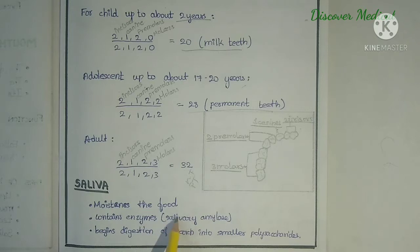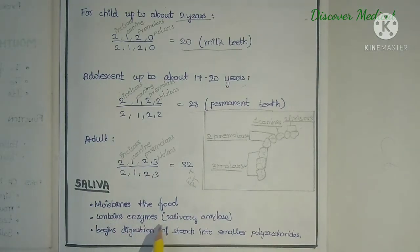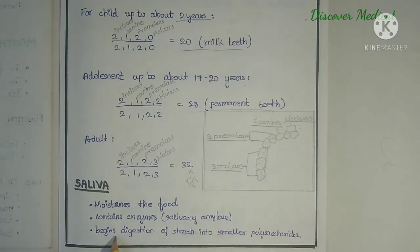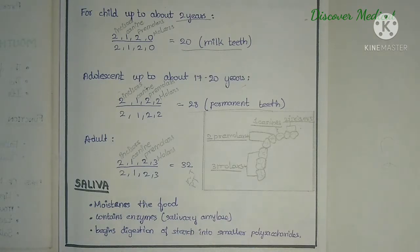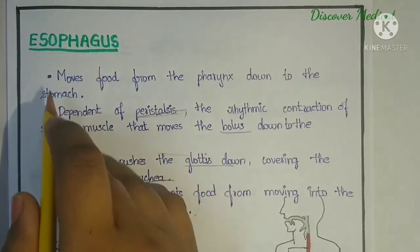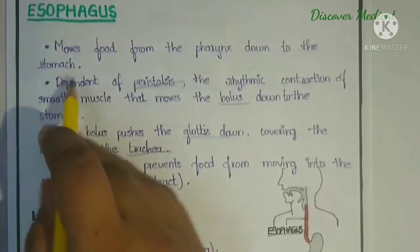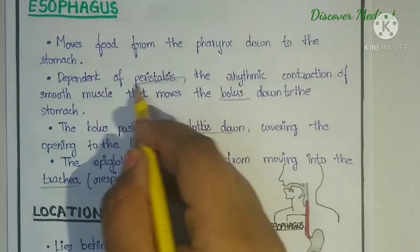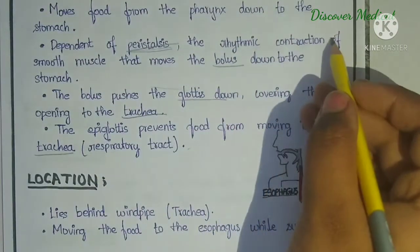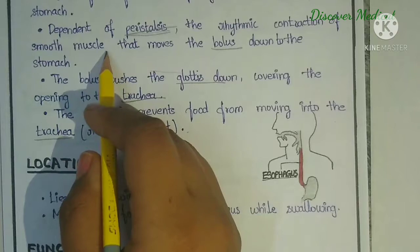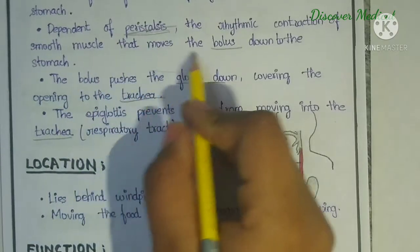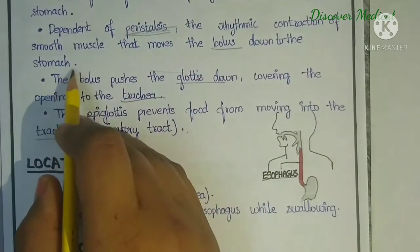Saliva moistens the food and contains the enzyme salivary amylase, which begins digestion by breaking starches into smaller polysaccharides. The esophagus moves food from the mouth down to the stomach by means of peristalsis — the rhythmic contraction of smooth muscle that moves the bolus down to the stomach.